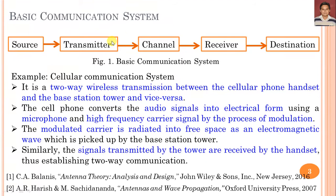Between the transmission of information from the cellular phone to the base station, and in the reverse direction from the base station to the cellular phone, we can communicate through this basic communication system. We can consider a cell phone at the transmitting side — the cell phone converts audio signal into electrical form using a microphone.